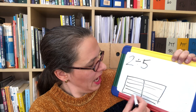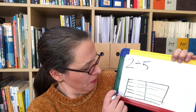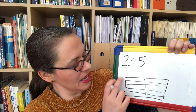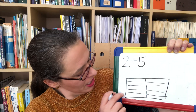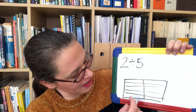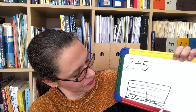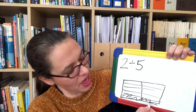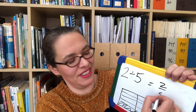We had two and we're sharing it fairly between five people. We can imagine our five people here, and each person gets this much — that's one fifth and another fifth, so the answer is two fifths.